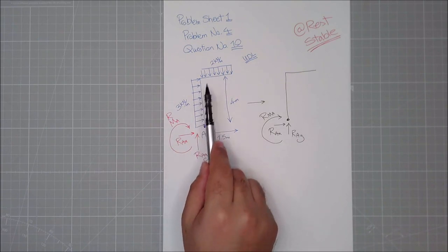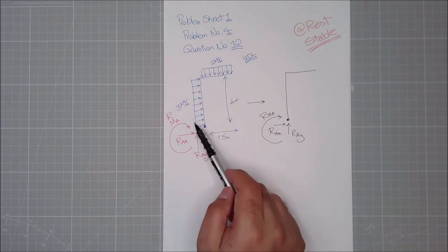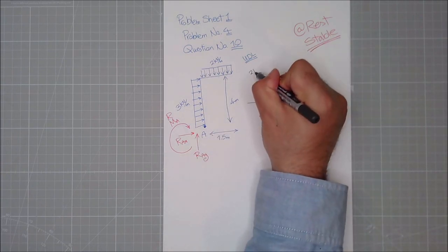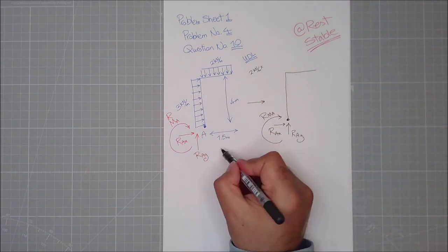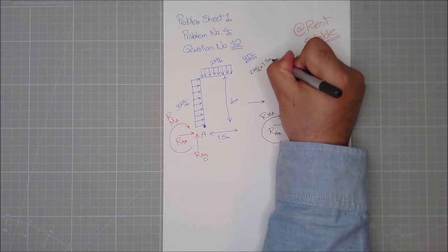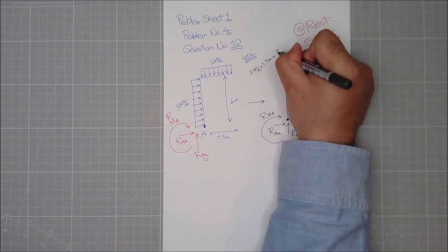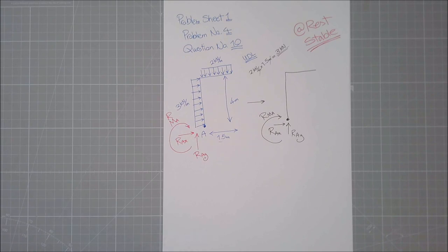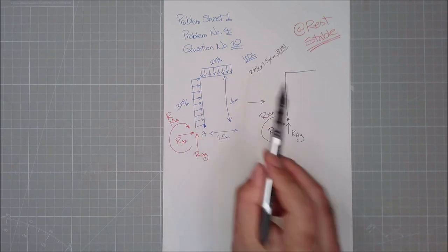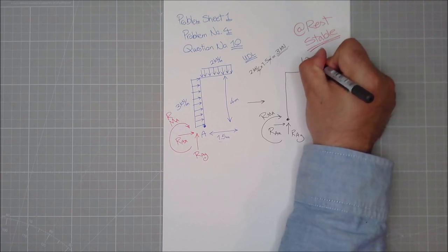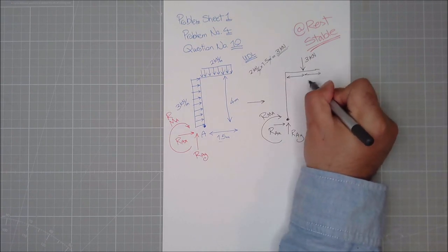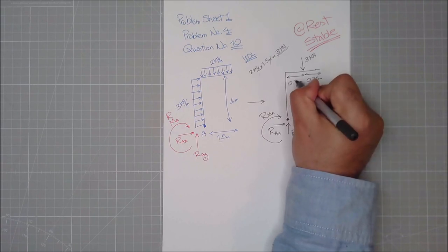What is the resultant of these distributed loads? We said the resultant equals the area of that load. So 2 kilonewtons per meter times the length it's applied over — 1.5 meters — gives 3 kilonewtons. The meters cancel, leaving 3 kilonewtons. Where is it applied? At the centroid of the loading, which for a rectangle is at its middle — so at 0.75 meters from the end.